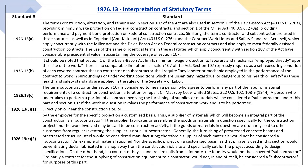The use of the same or identical terms in these statutes which apply concurrently with Section 107 of the act have considerable precedential value in ascertaining the coverage of Section 107. 1926.13b: It should be noted that Section 1 of the Davis-Bacon Act limits minimum wage protection to laborers and mechanics employed directly upon the site of the work. There is no comparable limitation in Section 107 of the act. Section 107 expressly requires as a self-executing condition of each covered contract that no contractor or subcontractor shall require any laborer or mechanic employed in the performance of the contract to work in surroundings or under working conditions which are unsanitary, hazardous, or dangerous to health or safety.